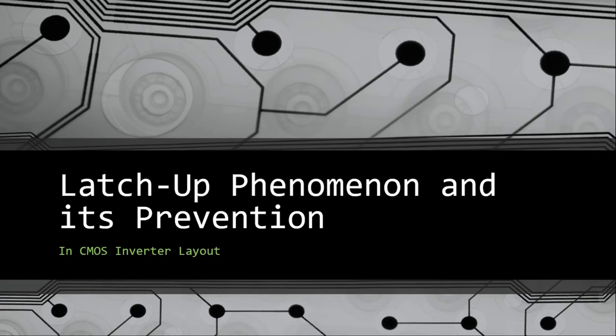Welcome. In this video I'm going to explain latch-up phenomenon in CMOS circuits and its prevention. Latch-up is a condition where a low impedance path is created between the supply pin and the ground pin. This condition is created by a trigger, but once activated the low impedance path remains even if the trigger has been removed, so the inverter output will not change with the input and it stays at a certain logic.